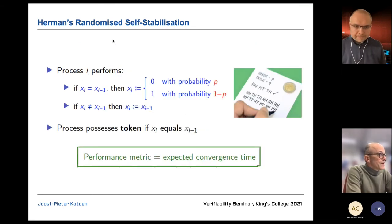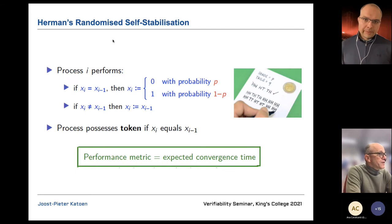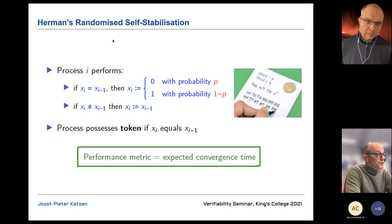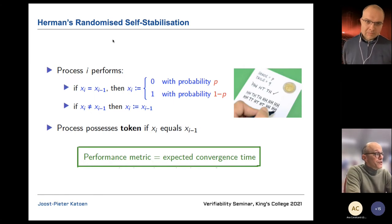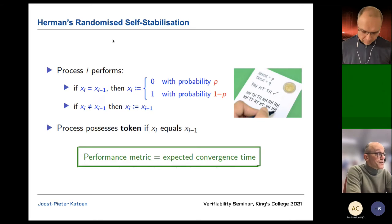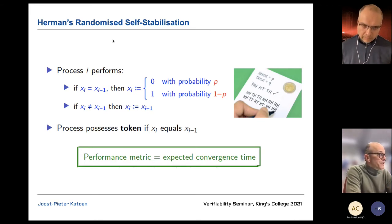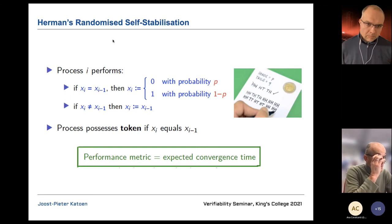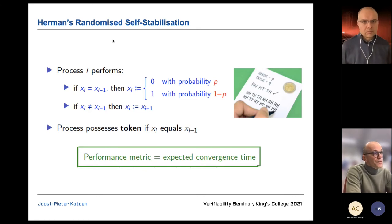Hermann's algorithm is a two-line anonymous algorithm where every process does the same. If your value x_i equals your left neighbor's value x_{i-1}, you flip a biased coin and set your variable to zero or one based on the outcome. If you have a different color than your neighbor, you copy the neighbor's color. A process possesses a token if x_i equals x_{i-1}. We're interested in the expected number of steps until the system reaches a legitimate state — a single token in the whole network.